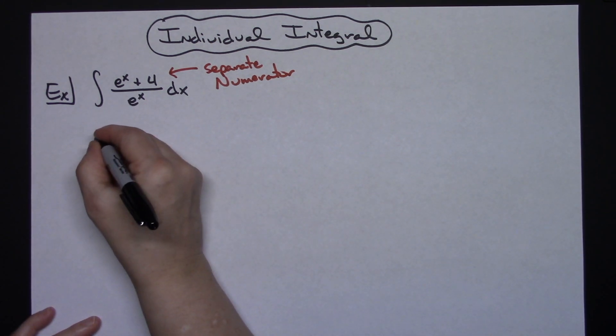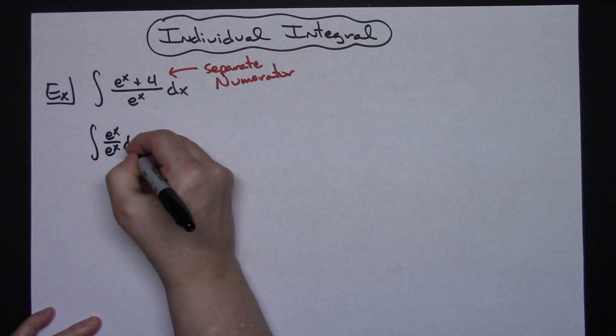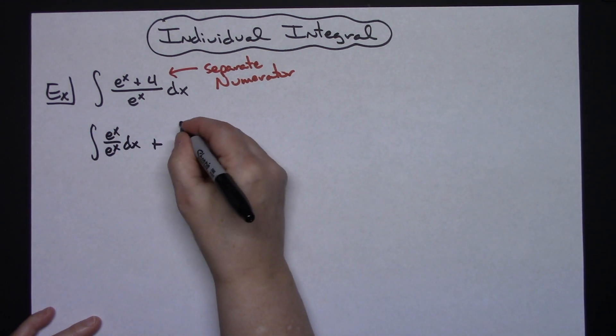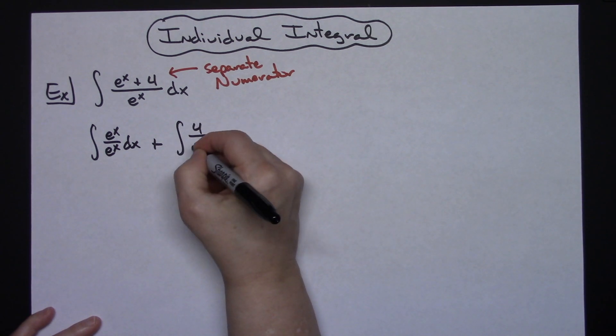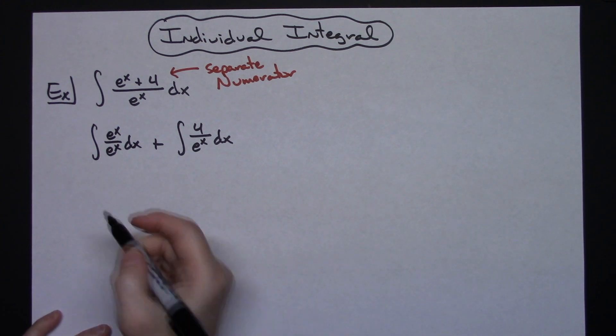I'm going to write this as the integral of e to the x over e to the x dx, then I'm going to add the integral of 4 over e to the x dx. Just going to break that up into two separate integrals.